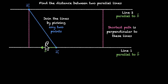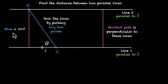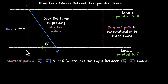Now we need to relate this blue length with this purple length. Let's assume that the vector A2 minus A1 makes an angle theta with this line — meaning it makes an angle theta with B vector, or B cap, the unit vector along B. Now that we have this theta, we can use this right angle triangle to find the purple length in terms of the blue length. If this length is blue, the purple length becomes blue times sin theta. We can use trigonometry here.